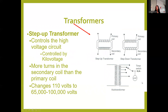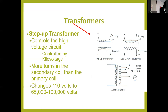Now the step-up transformer: there are more turns in the secondary coil, so voltage increases — going from 110 at the wall up to 65 to 100,000 volts. The step-up is controlled by kilovoltage, KVP, just like the step-down is controlled by MA. The transformers are affecting the voltage from the wall, either increasing it or decreasing it.